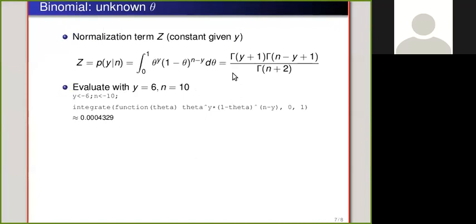This integral happens to have this form with the gamma functions, which with the integrals are same as factorial. And we can now try what happens if we integrate this. So notice that previously I integrated over something which had also that combinatorial term which we have now dropped off. So we're now just integrating over this, which is same as in here, and we get this value.